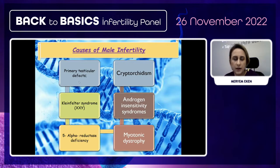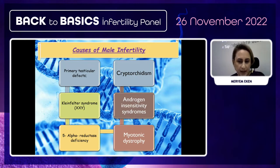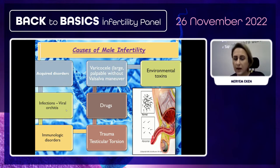Primary testicular defects include cryptorchidism, Klinefelter syndrome, androgen insensitivity syndromes, 5-alpha reductase deficiency, and myotonic dystrophy. Acquired disorders include varicocele (large, palpable, without Valsalva maneuver), environmental toxins, drugs, infections like viral orchitis, immunologic disorders, trauma, or testicular torsion.